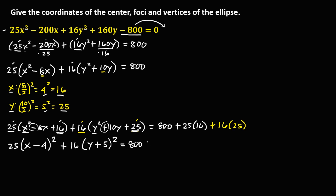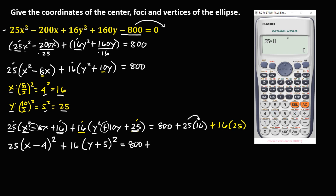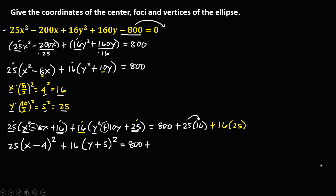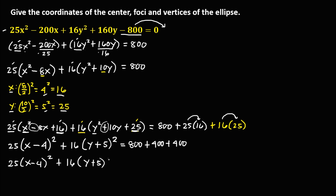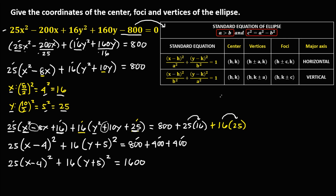Now simplify the right side: 800 plus 25 times 16 which equals 400, plus 16 times 25 which also equals 400. So the equation becomes 25(x minus 4)² plus 16(y plus 5)² equals 800 plus 400 plus 400, which is 1600.